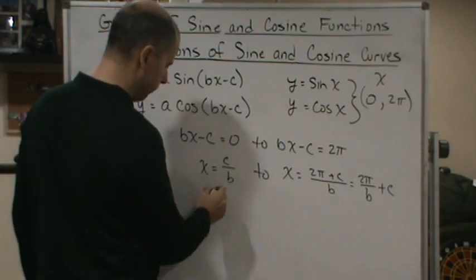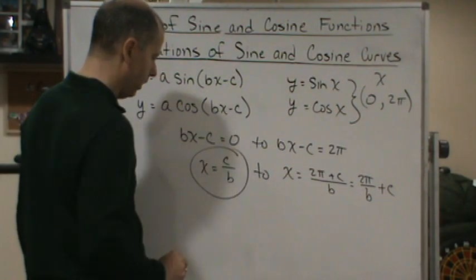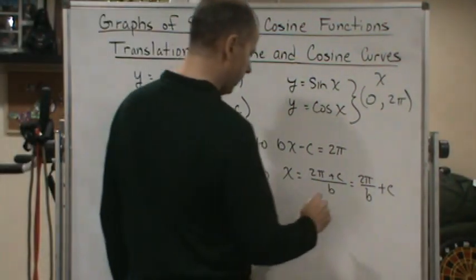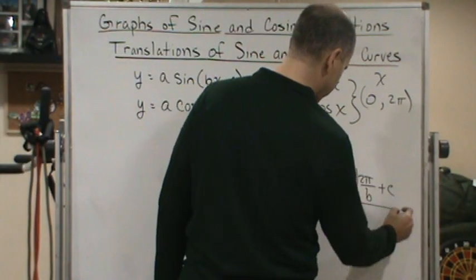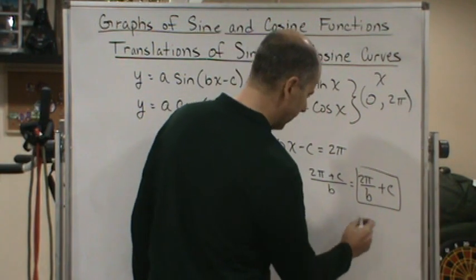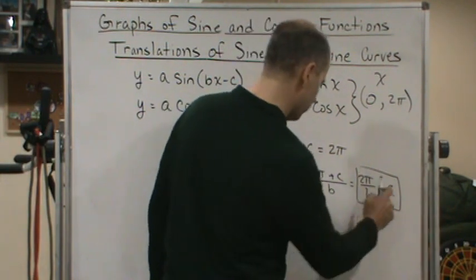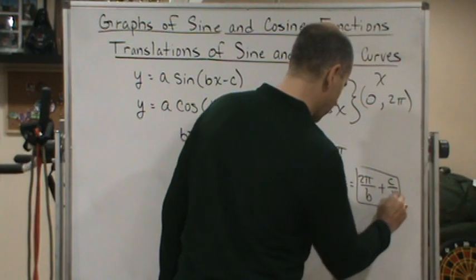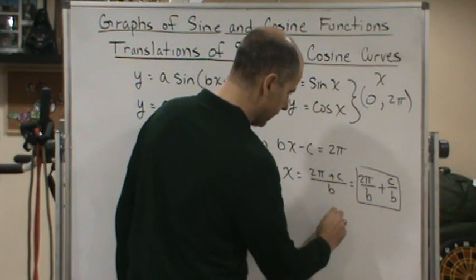This would be the left endpoint, and this would be the right endpoint. Wait, this is c over b. Notice that...